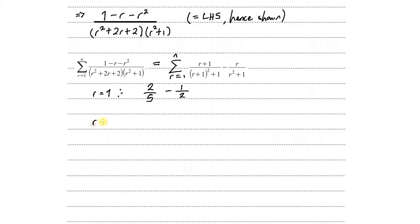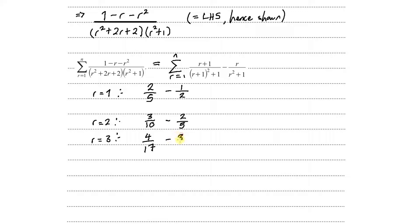When r equals 2: we get 3 over (2+1)² + 1 which is 3 over 10, minus 2 over 2 squared plus 1 which is 2 over 5. When r equals 3: we get 4 over (3+1)² + 1 which is 4 over 17, minus 3 over 3 squared plus 1 which is 3 over 10.